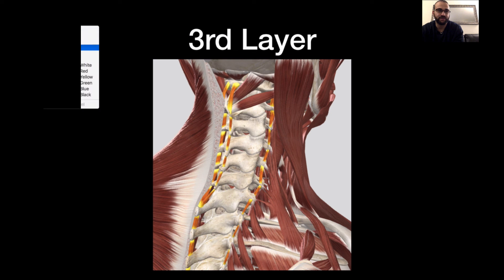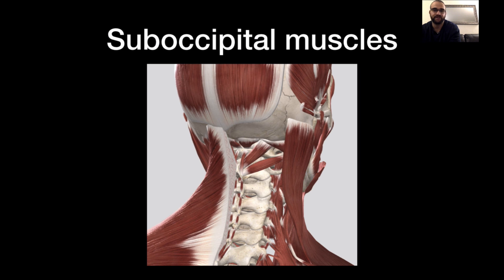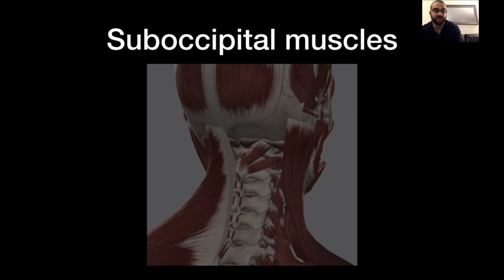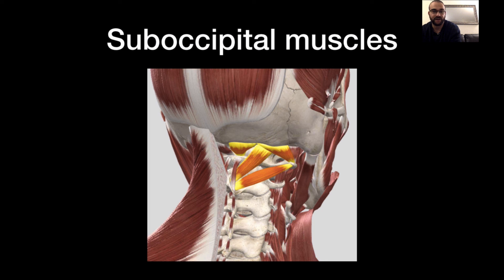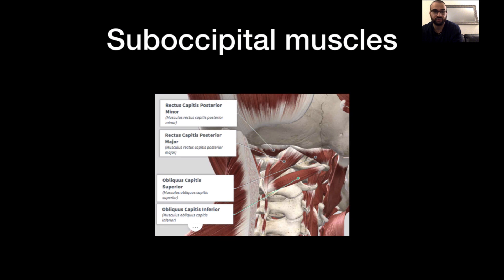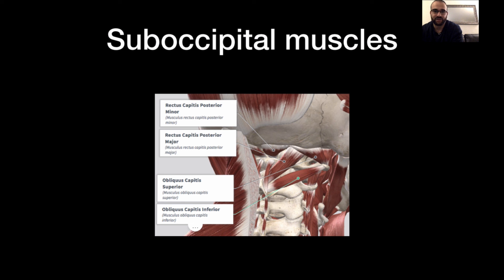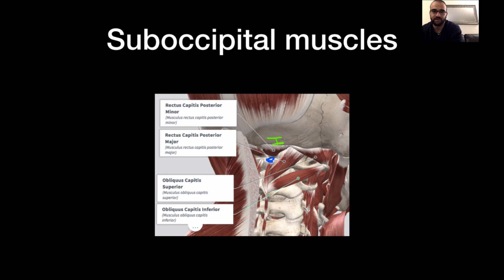The last topic is the muscles under the head: the suboccipital muscles, which consist of four muscles in two groups. The rectus capitis posterior group and the oblique capitis group, with minor/major and superior/inferior variants. The rectus capitis posterior minor originates from the tubercle of the atlas and inserts at the occipital bone. When these muscle fibers contract, they extend the head, pulling it backwards.